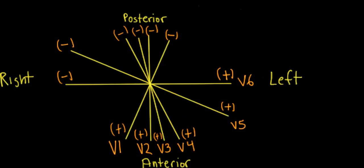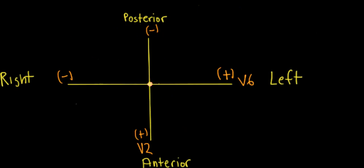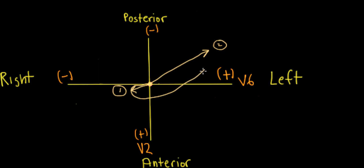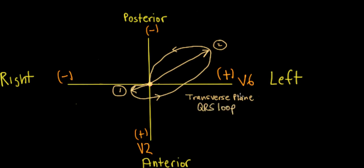Now here is the transverse plane. V1 and V2 are more right and anterior, while V5 and V6 are more leftward-posterior. We strip away some leads and leave V6 and V2, which are perpendicular pairs. Starting in the center, we put in our septal vector — rightward and anterior, a small vector. Then our left ventricle free wall forces, electrically dominant, point left and posterior — labeled vector two and bigger due to the LV's greater mass. We connect the vector heads to make a transverse plane QRS vector cardiogram loop with directionality.